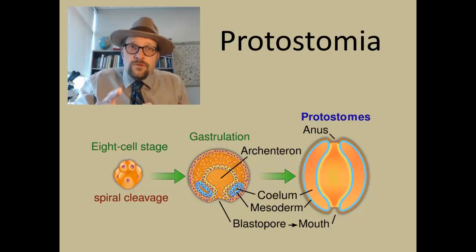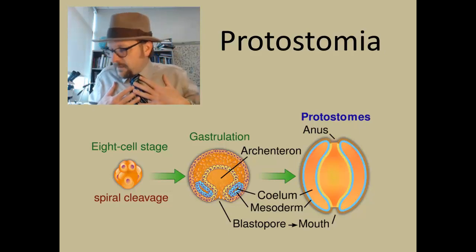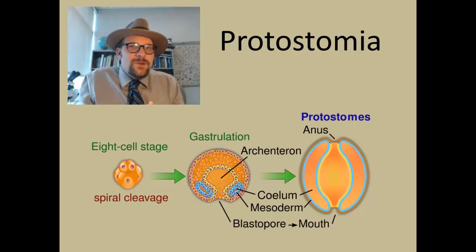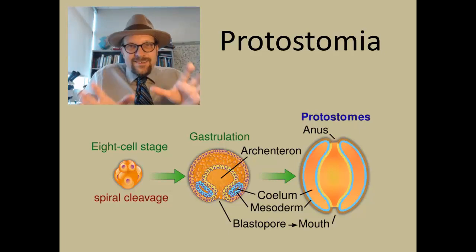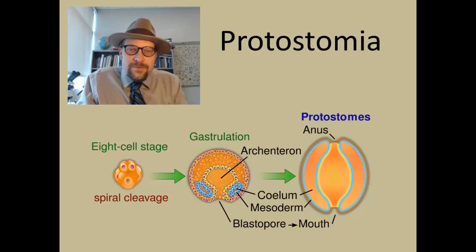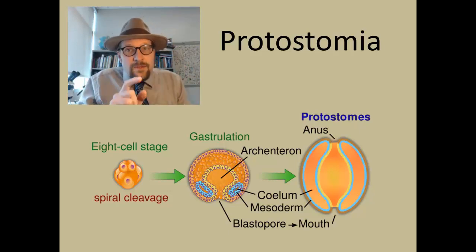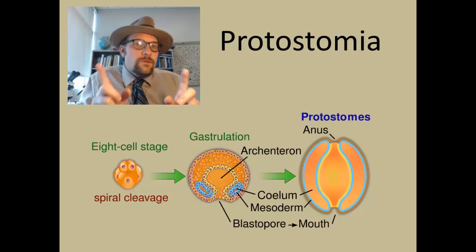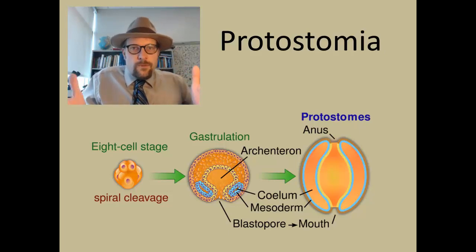This is in contrast to deuterostomes, which include us, humans, and also includes echinoderms, the starfish. In us, the initial opening develops into the anus, and our mouths are a secondary development in the early embryo, often surrounded by mesoderm cells, which later go on to form our brains.